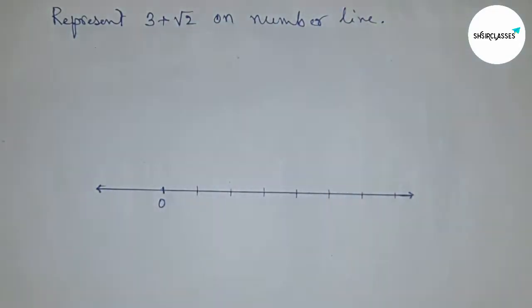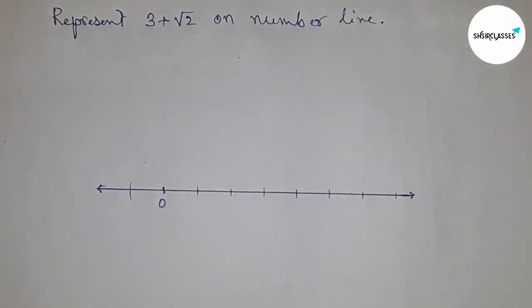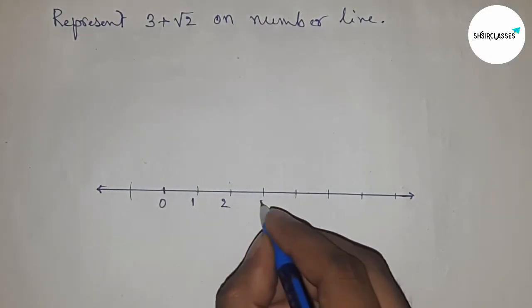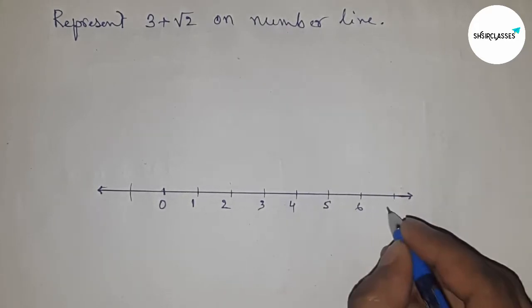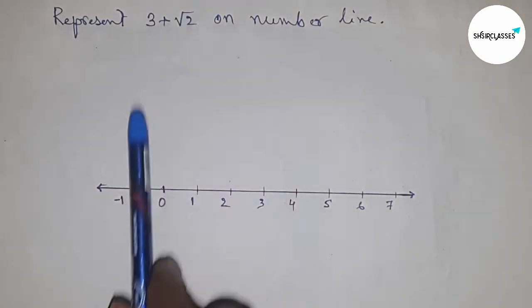Marking all the numbers on the line. So this is 1, 2, 3, 4, 5, 6, 7, and this side minus 1.